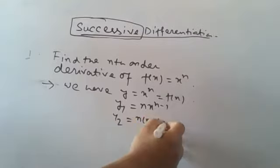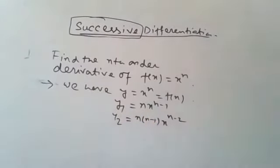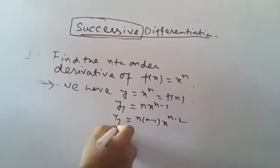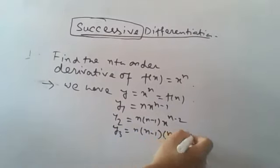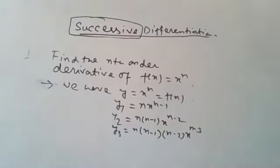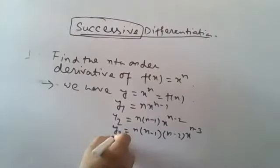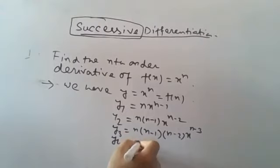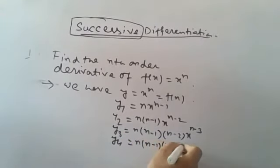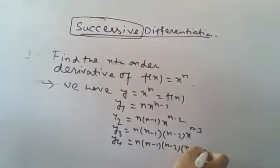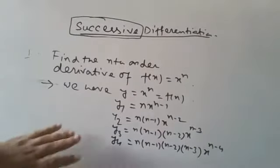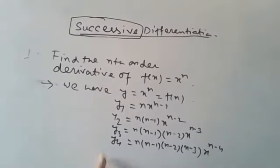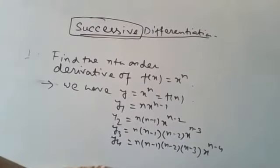If we have y3, y3 is equal to n(n−1)(n−2) times x to the power (n−3). If we have the derivative y4, then we have n(n−1)(n−2)(n−3) times x to the power (n−4). Continuing for y5, y6, y7, y8, we see a clear pattern forming.